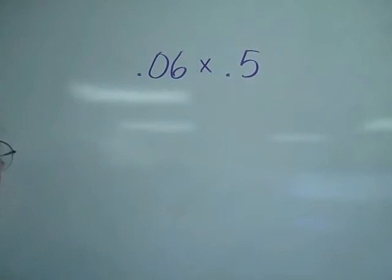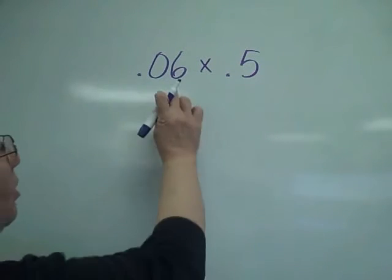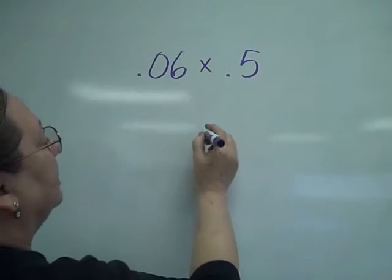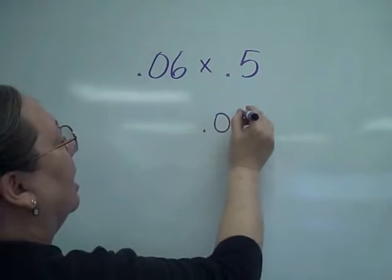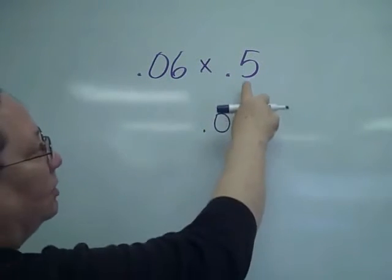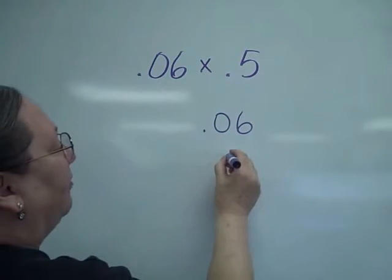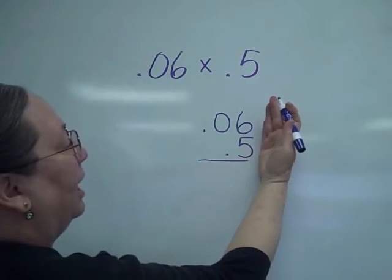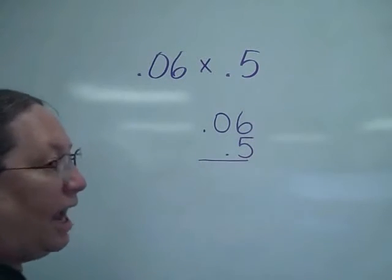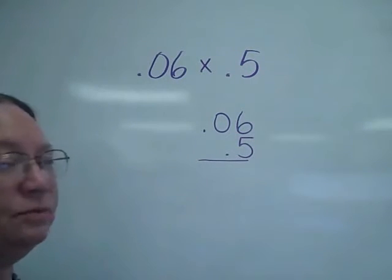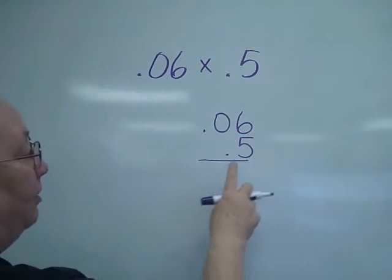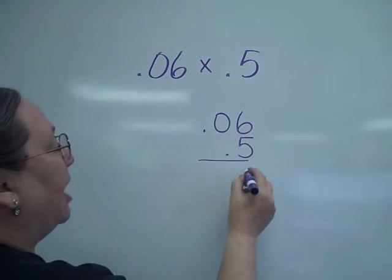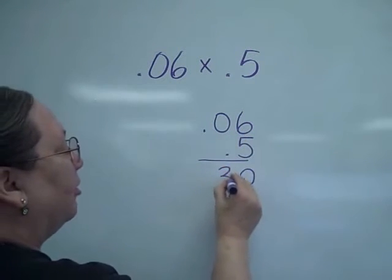But you do have to line up the numbers as if the decimals weren't there. I'm going to look at 0.06, or 6 hundredths, multiplied by 5 tenths. Notice that I'm lining up the numbers on the right side. When I go to multiply, I'm going to be multiplying 6 times 5, which is 30.